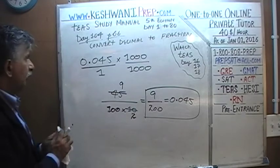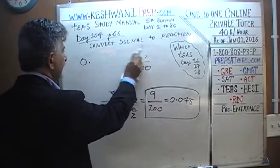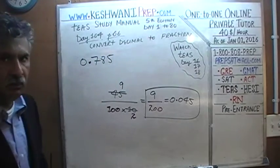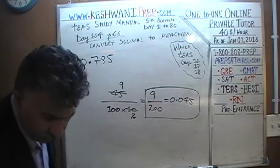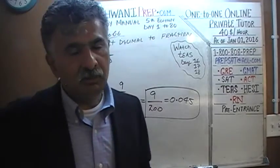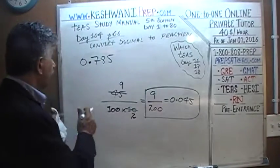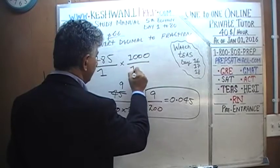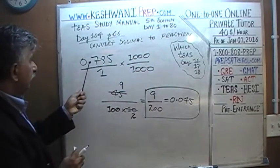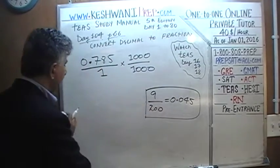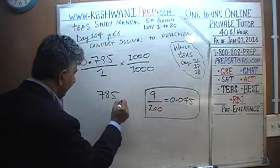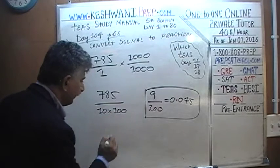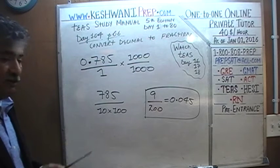Let's do one more. This time we are being asked to convert 0.785 into a fraction. 0.785 has three decimal places, so we are going to multiply top and bottom by 1,000. We introduce 1 on the bottom. 0.785 times 1,000 becomes 785, and on the bottom we have 1,000. We write our 1,000 as 10 times 100, which makes it easier to manage.